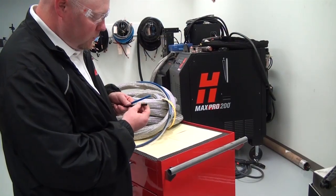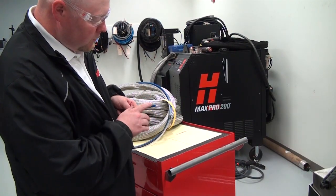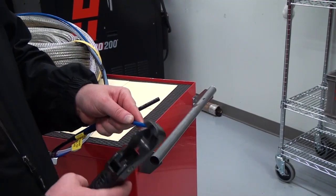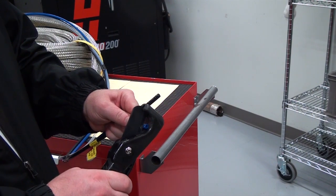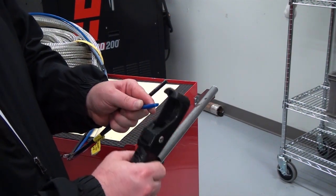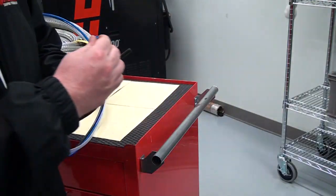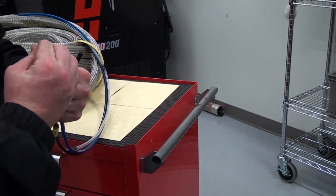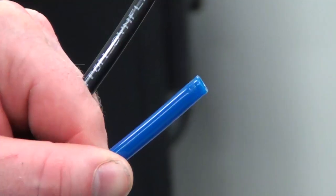Some of the connections on the XPR use push to connect fittings. In some cases, an indent can form on the nylon tubing and create a leak. Usually trimming the hose 3.175 millimeters or 1 eighth inch will fix the problem. Only remove what is necessary to avoid making the hose too short, causing the hose not to seat all the way into the fitting.